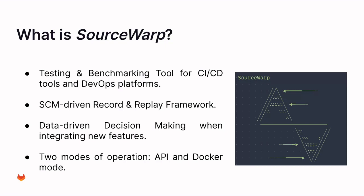We have two different modes of operation. One is API mode and the other one is Docker mode. API mode basically means that you are communicating with some GitLab instance that's not running on your system, and you can use Docker mode if you want to just benchmark and test things locally.